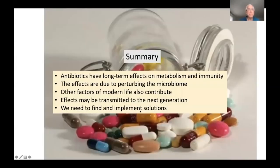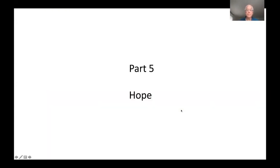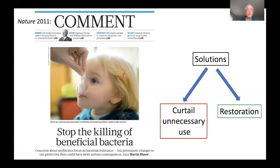Let me summarize what I've said thus far. Antibiotics have long-term effects on metabolism and immunity; the effects are due to perturbing the microbiome. There are other effects of modern life that also might contribute. The effects may be transmitted to the next generation. And it's important that we need to find and implement solutions. Part five: hope. So how are we going to solve this problem?